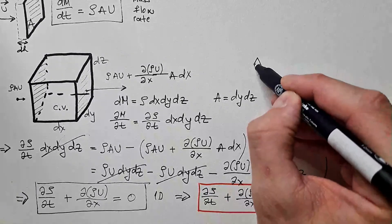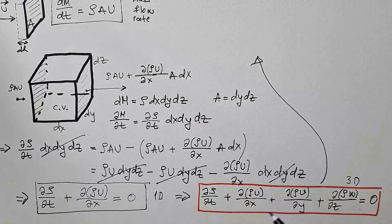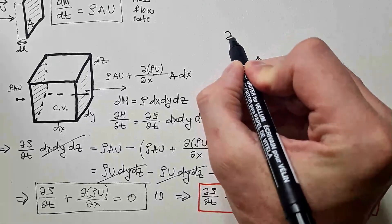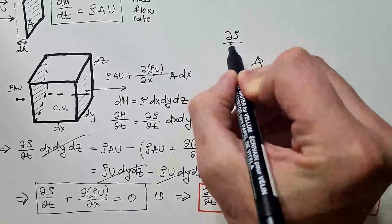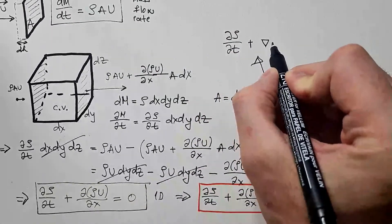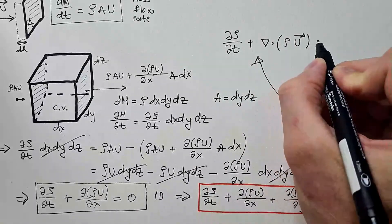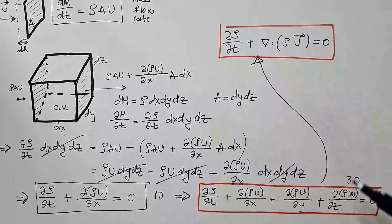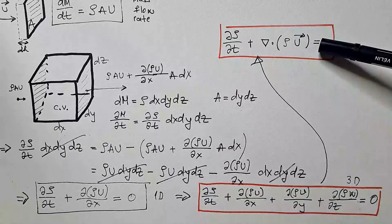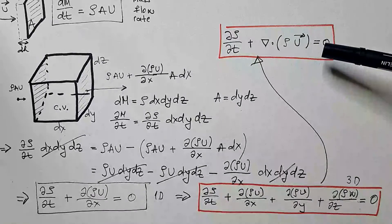I hope that some of you can recognize that there is del operator over here and that the continuity equation can be written as δρ/δt plus. This is nabla dot ρu as a vector, and that is equal to zero. And this is the same as this, but written in more compact way.